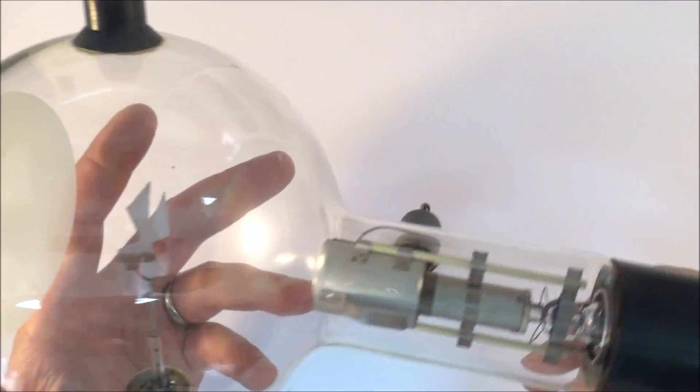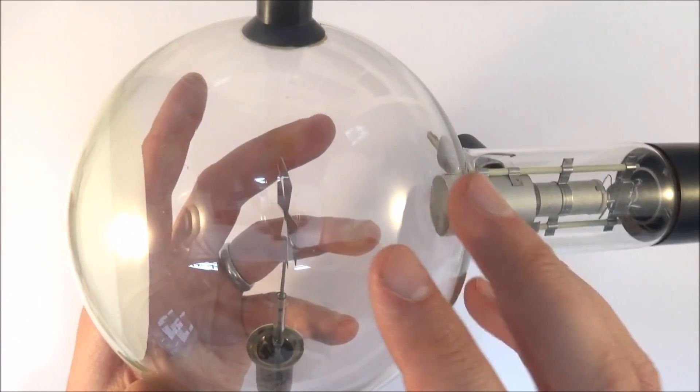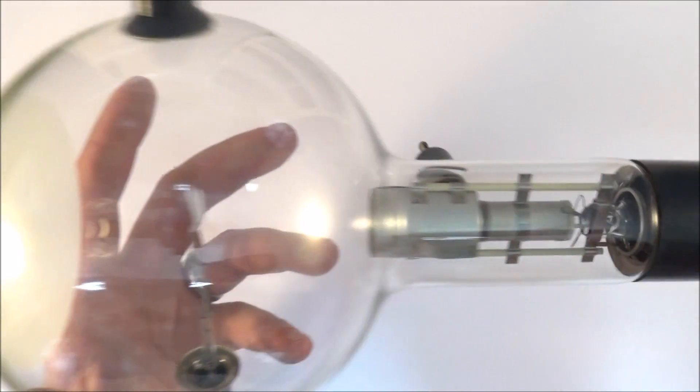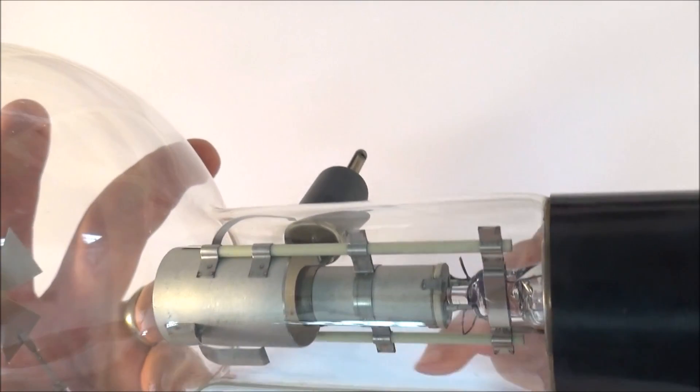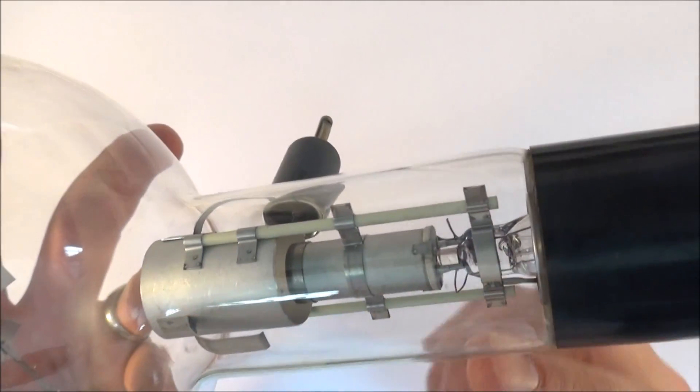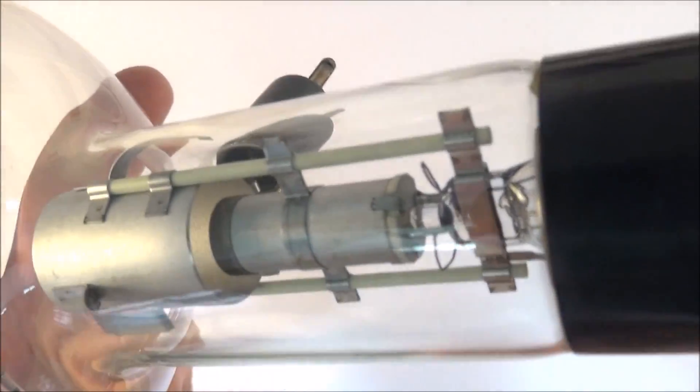These tubes all follow the same kind of principle. What we have is pretty much a near vacuum inside the tube. At one end we have a source of charged particles. In this case it's cathode rays or electrons and they're caused by thermionic emission up here.